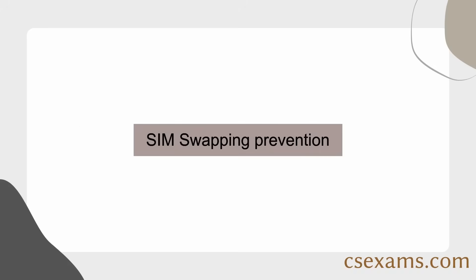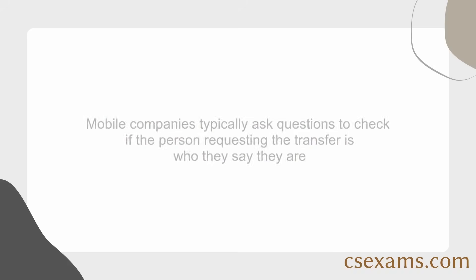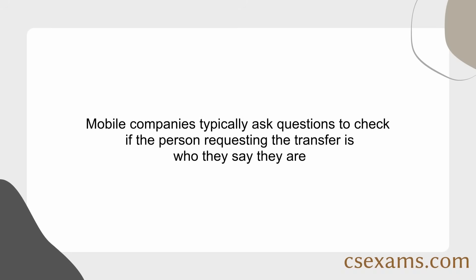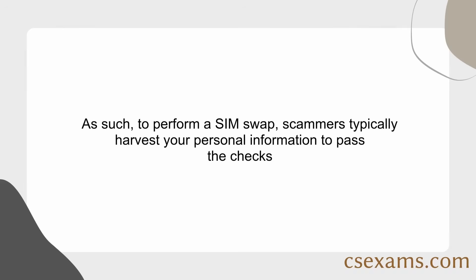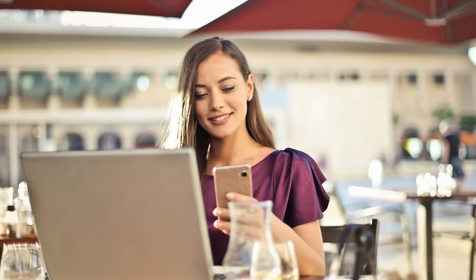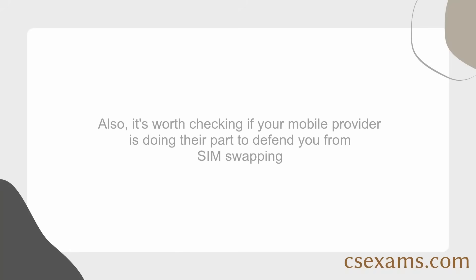SIM Swapping Prevention: mobile companies typically ask questions to check if the person requesting the transfer is who they say they are. As such, to perform a SIM swap, scammers typically harvest your personal information to pass the checks. Always keep your personal details private to avoid someone stealing your identity. Also, it's worth checking if your mobile provider is doing their part to defend you from SIM swapping.